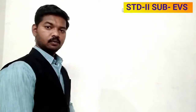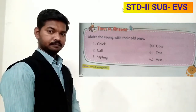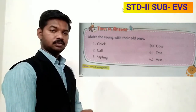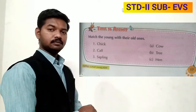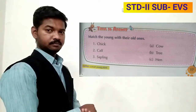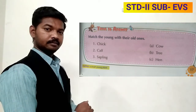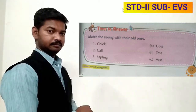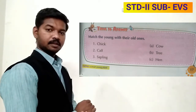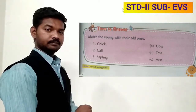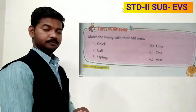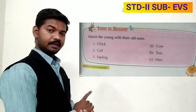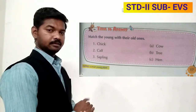These are all the words you have to recite. Now see page number 17 — time to answer. You have to match young ones with their older ones. Number one: chick — correct — hen. Number two: calf — correct — cow. Number three: sapling — correct — tree.